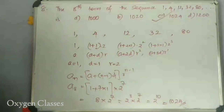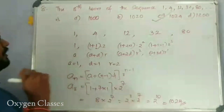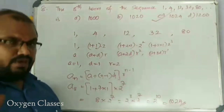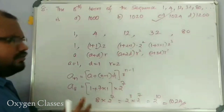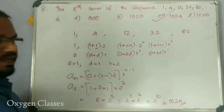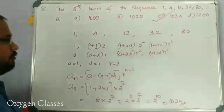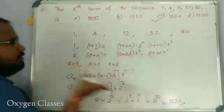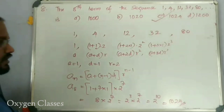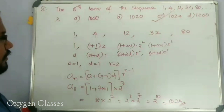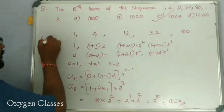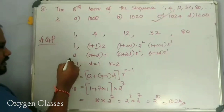So the answer is 8 into 2 raised to 7, which equals 1024. That is the answer. This is the arithmetico-geometric progression — A, G, P.